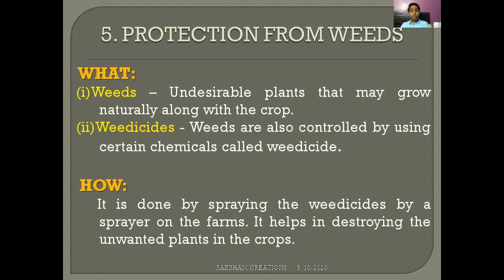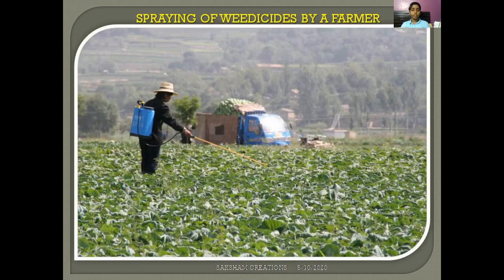The next process is protection from weeds. Weeds are undesirable plants that may grow naturally along with the crop. Plants that are not needed with the crop and grow naturally are known as weeds. Weeds are also controlled by using chemicals called weedicides. Protection from weeds is done by spraying weedicide using a sprayer on the farm, which helps destroy the unwanted plants. As seen in the picture, a farmer carries a sprayer on his back and sprays weedicide in the farm.